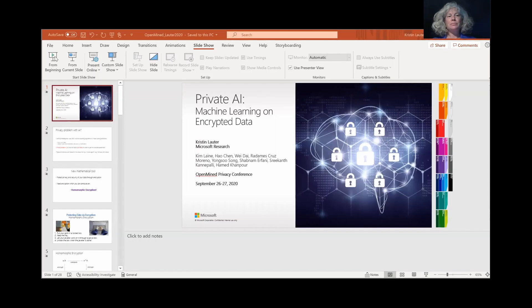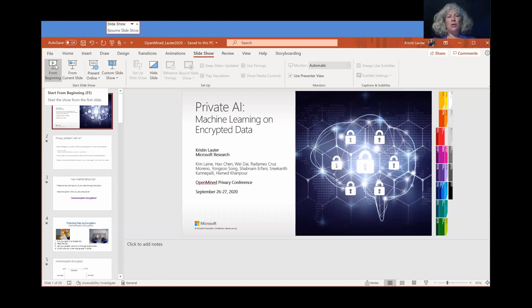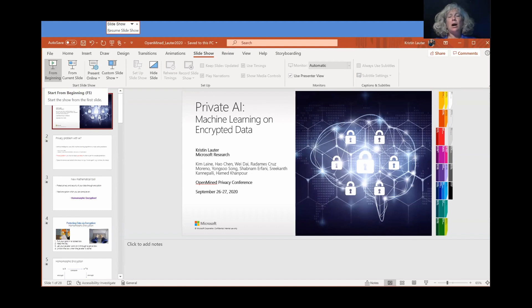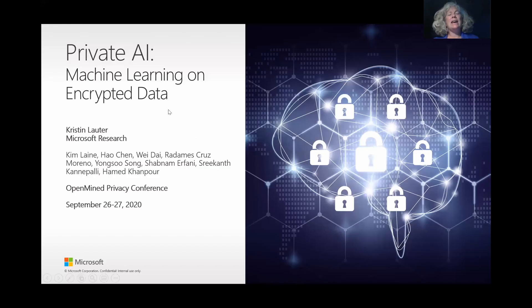Hi everyone, thank you so much for joining me. I'm Kristin Lauter from Microsoft Research, and I'm the Research Manager for the Cryptography and Privacy Research Group. Today I'd like to talk to you about my team's work on Private AI: Machine Learning on Encrypted Data. This is a project we've been working on over the last five years, which has led to the development and release of Microsoft SEAL — an encryption library which can be used to help protect privacy in AI applications.